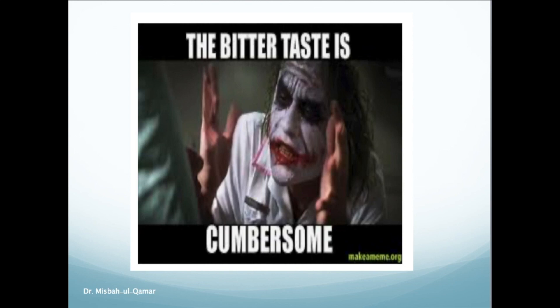An important example of a bitter substance is quinine, which is a bitter-tasting substance with anti-malarial properties, extracted from tree bark. For eliciting taste, it can block most classes of potassium channels and cause non-specific membrane depolarization. Some substances initially taste sweet but have a bitter aftertaste — for example, saccharine — and this characteristic makes the substance objectionable to some people.